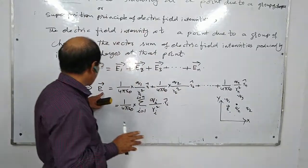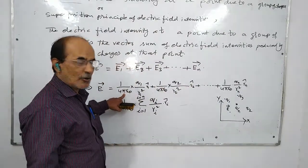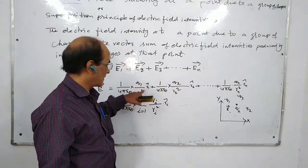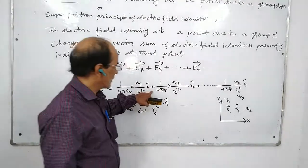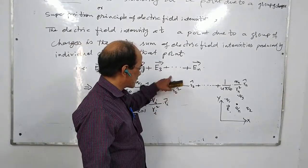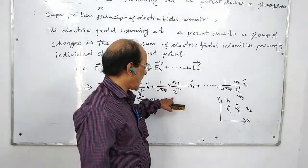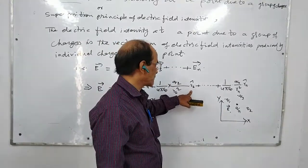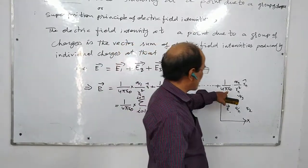Similarly, E1 equals 1 by 4πε₀, Q1 by R1². E2 equals 1 by 4πε₀, Q2 by R2², and so on. 1 by 4πε₀, Q1 by R1² R1 cap.